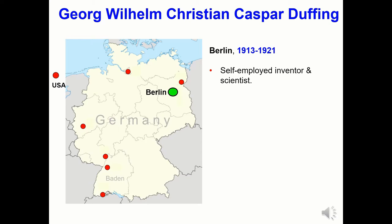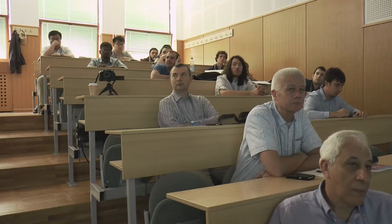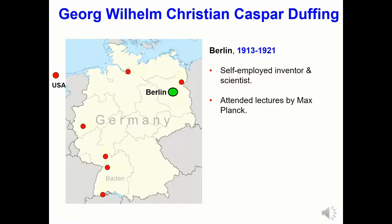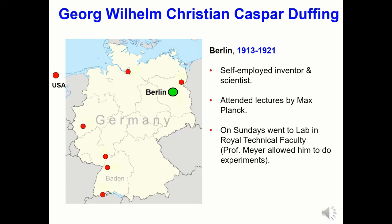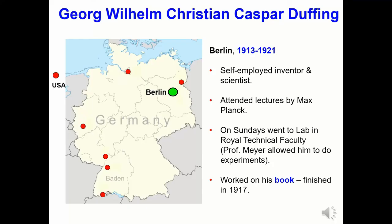Duffing returned to Germany in 1913, aged 52. He lived in Berlin where he worked as a self-employed inventor and scientist. He chose Berlin because he wanted to listen to the lectures of Max Planck on quantum theory. During the First World War, Duffing was working on vibrations, brakes, ears, and engines. On Sundays, he would go to the lab at the Royal Technical Faculty with his eldest daughter — Professor Meyer allowed him access to conduct experiments. It was during this time that he completed his book, published by Vuegg and Son in 1918 and costing five Deutschmarks.